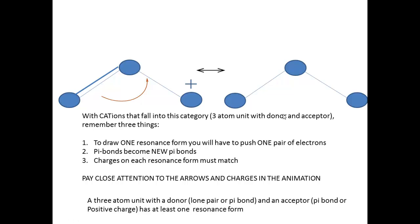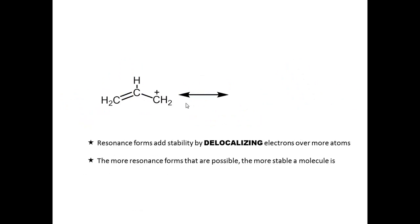Cations work similarly — this is another three-atom unit. I take the pi bond and shift it to stabilize the positive charge. I move these electrons to form a new pi bond, and the plus charge is now on the terminal carbon. In essence, I've shared the positive charge across all three atoms. Here's the chemical example: I move these electrons to make a new pi bond, resulting in a resonance form with the plus charge on this terminal carbon.